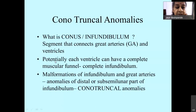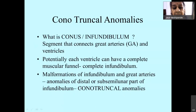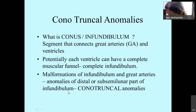What is this conus or infundibulum? It is a segment that connects the great arteries to the ventricles. Potentially, each ventricle can have a complete infundibulum or a muscular funnel. The conus is actually a muscular cone. When we have malformations of the infundibulum and the related great arteries, including anomalies of the distal or sub-semilunar part of the infundibulum, they are all categorized as conotruncal anomalies.